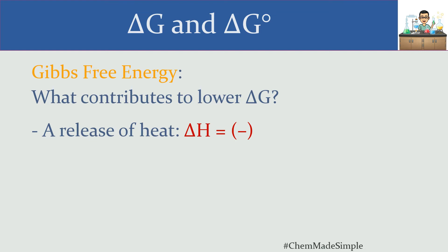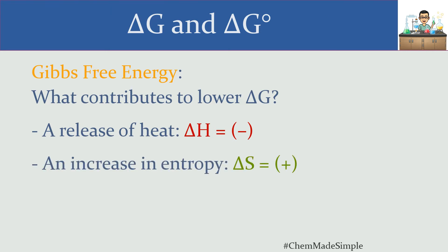Another thing that contributes to a lower delta G is how spaced out your molecules are. We want our particles to have a good amount of space among them, which contributes to overall stability. The way we measure how far apart the molecules are is by looking at entropy. Having increased entropy — more space among the molecules, more freedom of movement — is actually a good thing and a positive contributor to having lower energy and higher stability overall.